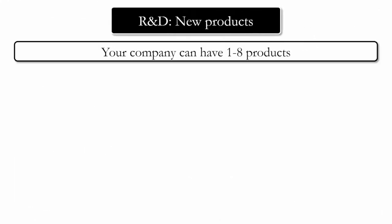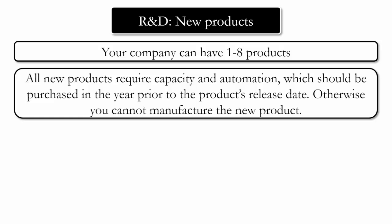Your company can have one to eight products. All new products require capacity and automation, and you have to purchase them the year prior to your new product's release date. It takes time to build plant and automation, so you have to think about this in advance. If you launch a new product without capacity and automation, you will not be able to manufacture it. It is also not possible to produce new products prior to the release date, so even when your new capacity and automation are active on January 1st, if your new product launches on July 1st, your capacity and automation will stand idle until that release date.